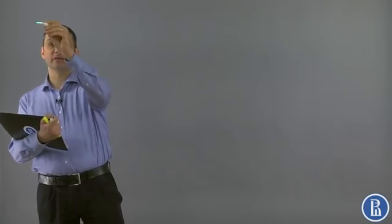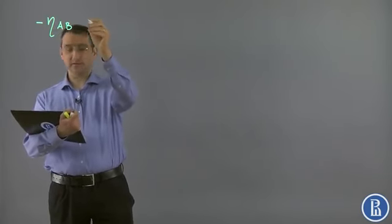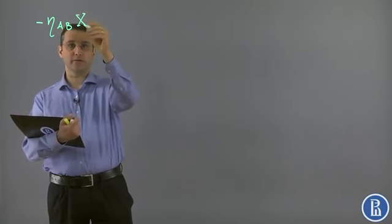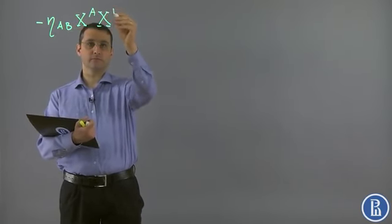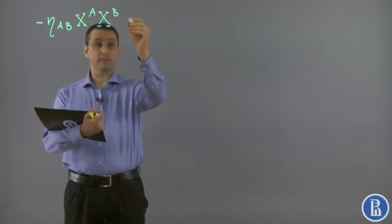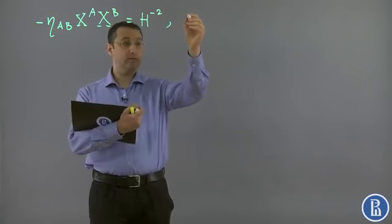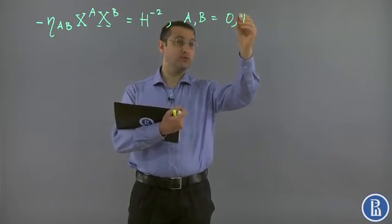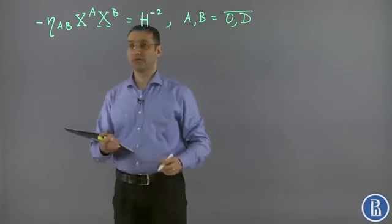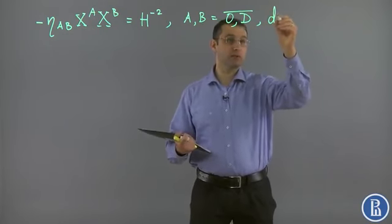Okay, we have started our consideration of this hyperboloid hypersurface, which is actually a hyperboloid as we will see in a moment, where A and B run from 0 to D. So it's a hyperboloid embedded into D plus one dimensional Minkowski space with the metric.